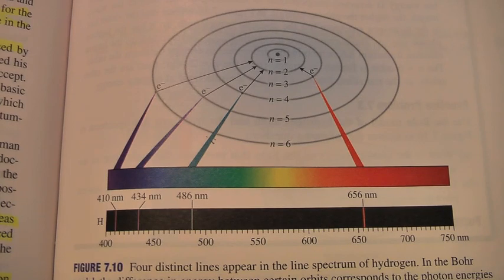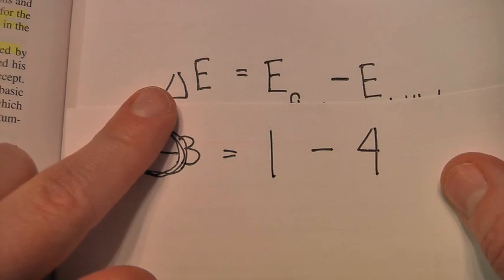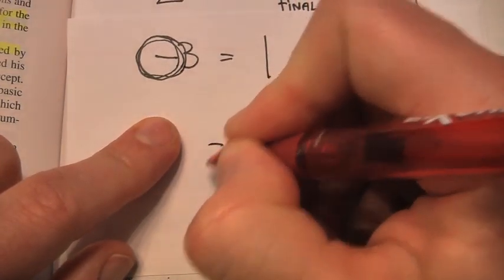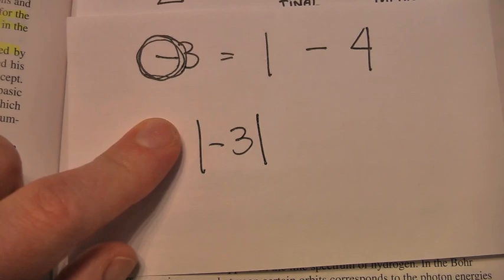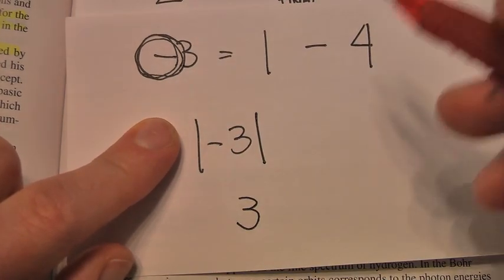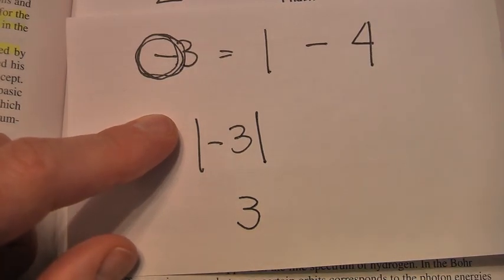Energy, though, should be the absolute value. So the change in energy is negative for that example, but the energy should always be the absolute value. So the absolute value of negative 3 is 3. Now these are just example numbers. You'll be dealing with numbers that are much smaller.